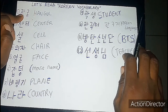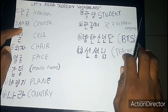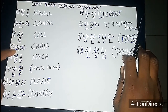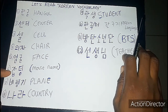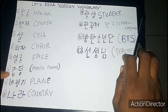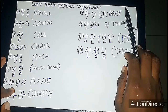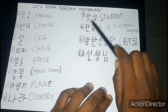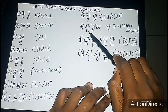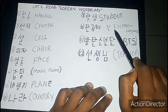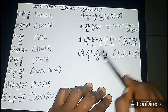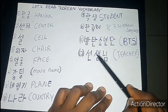Let's review all the words: hangul, center, cell, 의자 (uija), 얼굴 (eolgul), 갑통 (gaptong), 비행기 (bihaengi), 나라 (nara), 학생 (haksaeng), 한국어 (hangugeo), 방탄소년단 (Bangtan Sonyeondan), 선생님 (seonsaengnim).